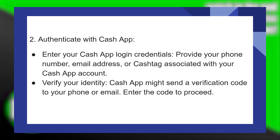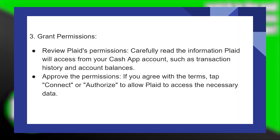Cash App might send a verification code to your phone or email. Enter the code to proceed. Carefully read the information Plaid will access from your Cash App account, such as transaction history and account balances.